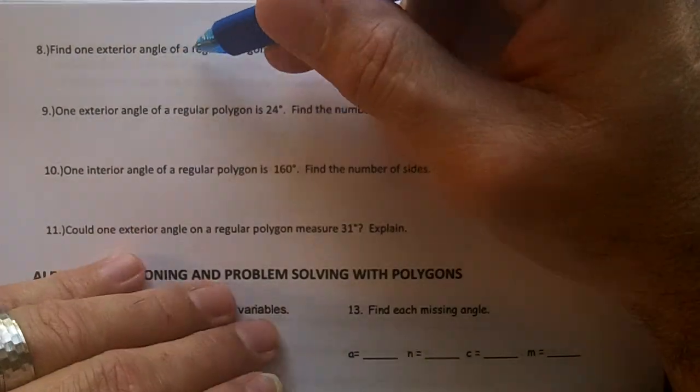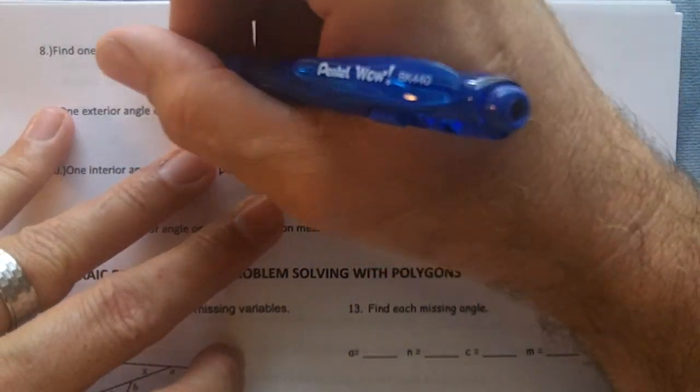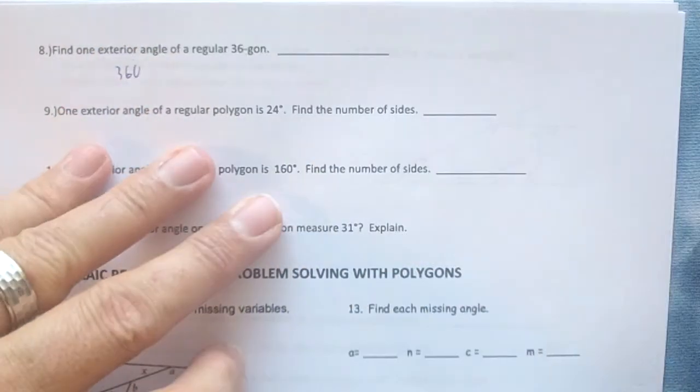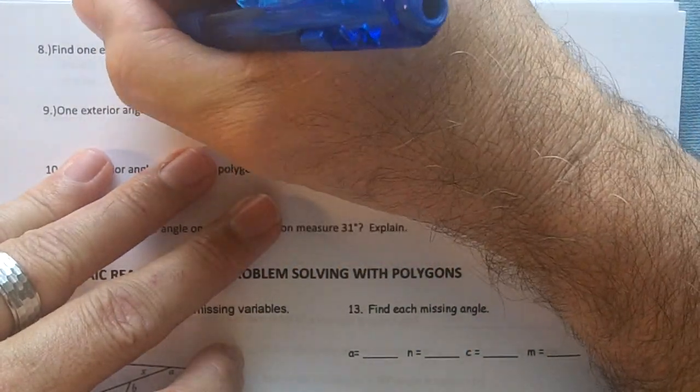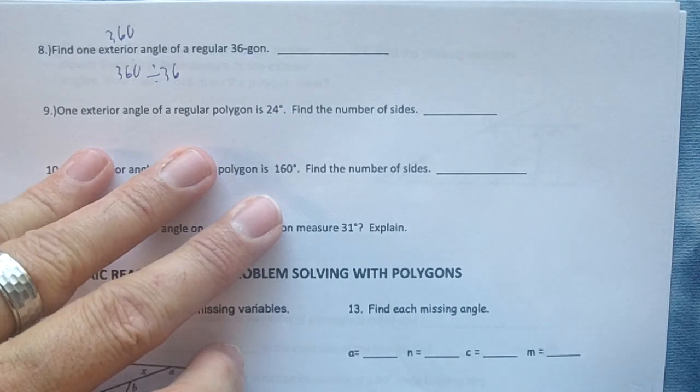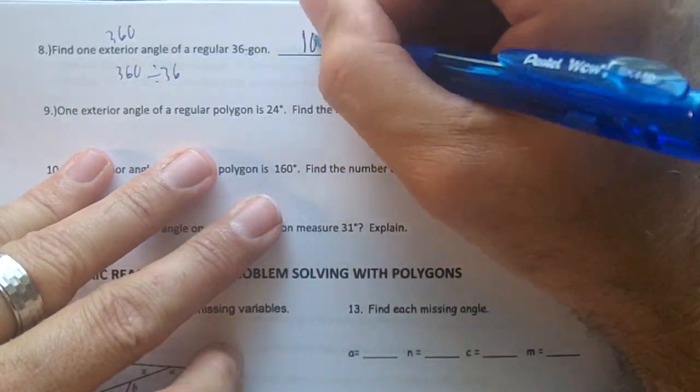Find one exterior angle of a regular 36-gon. So a 36-gon and exterior angles, all of them, add up to 360. We have 36 edges, we'll divide by 36. Remember your exterior angles add up to 360 degrees. So 360 divided by 36 would be 10 degrees.